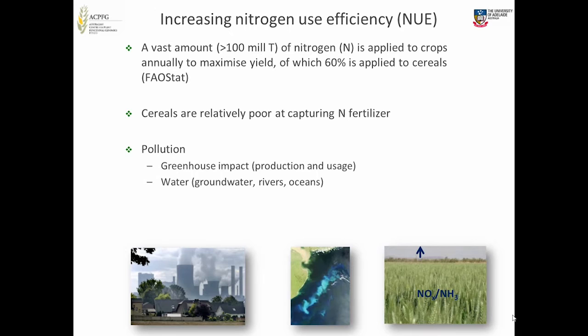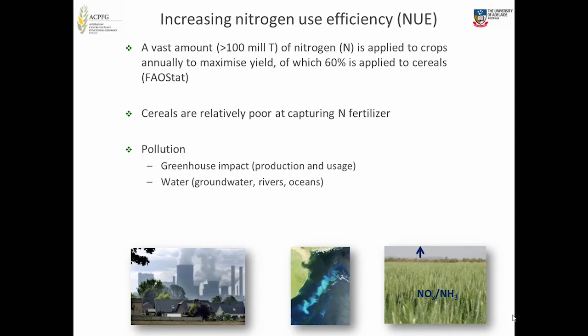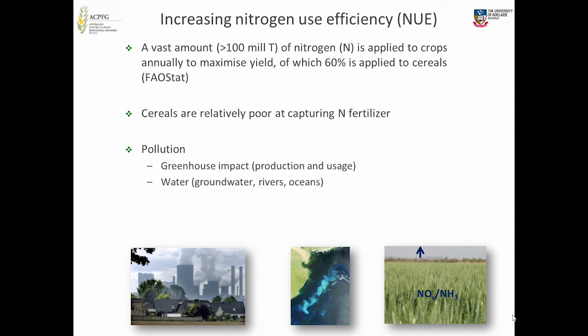If you look in the US in the maize growing areas, you've got millimolar concentrations of nitrate in the groundwater from fertiliser that's not being used — that washes out to sea. You've got algal blooms. The Mississippi Delta each year has a massive dead zone from algal blooms caused by nitrogen fertiliser.